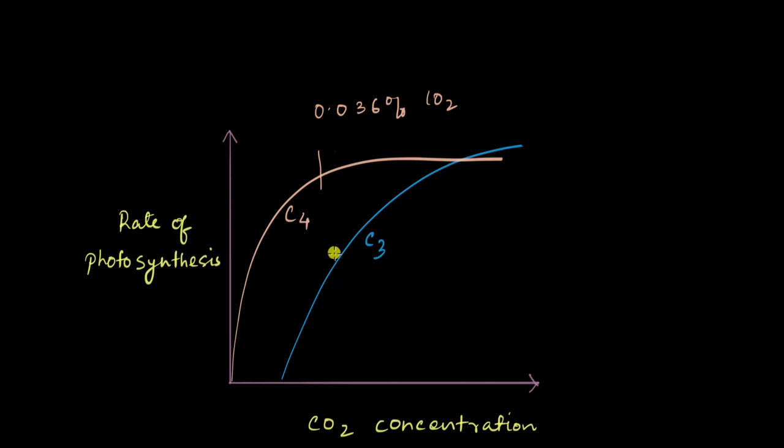Whereas if you look at C3 over here, it's far from leveling off at this concentration of CO2. The rate of photosynthesis in C3 plants is only about half or even less than half of what it could achieve.